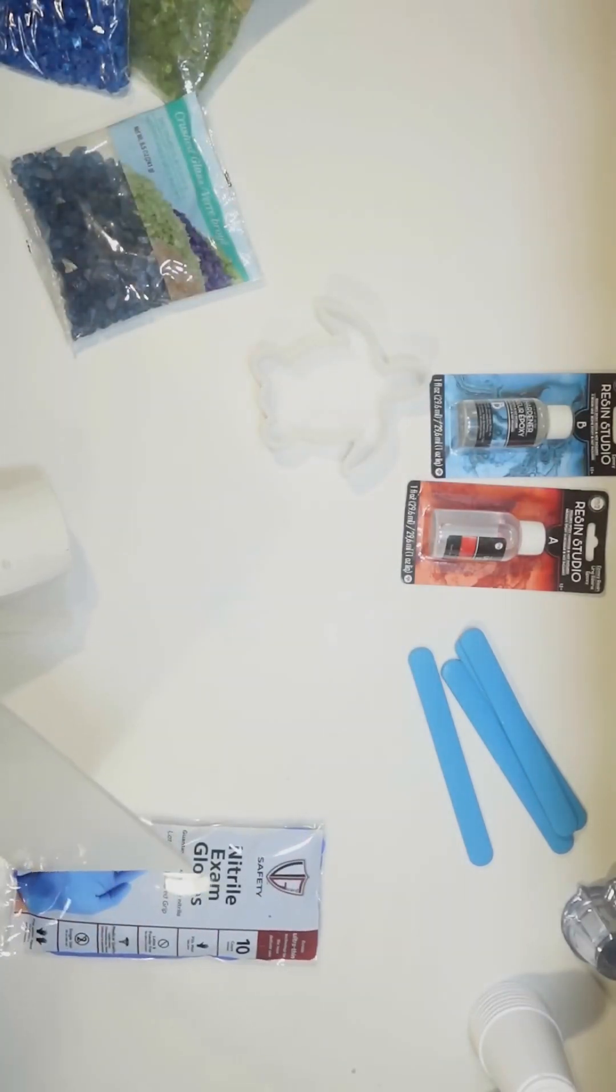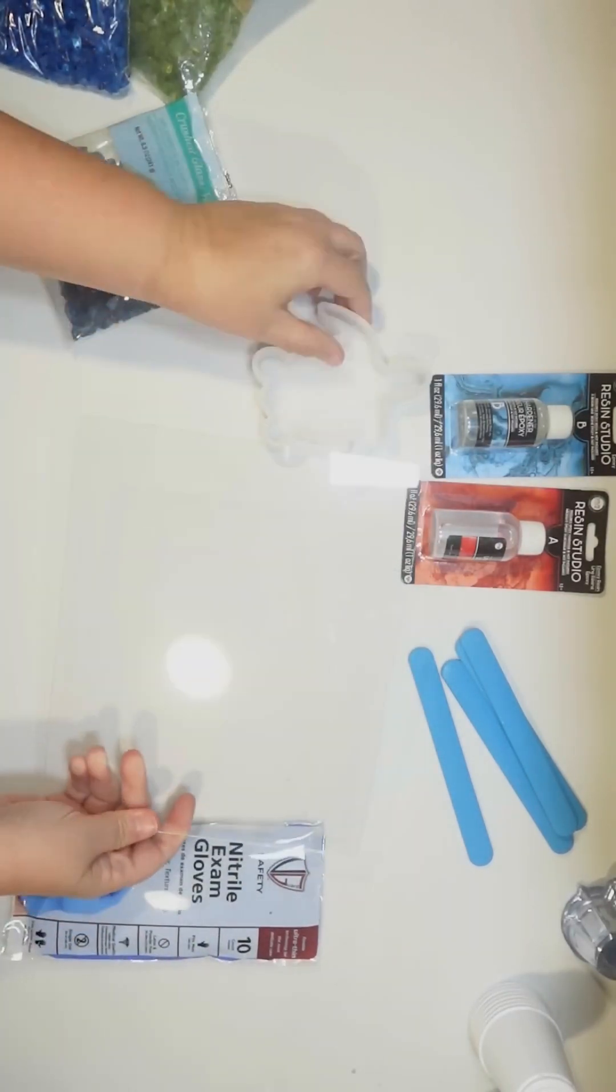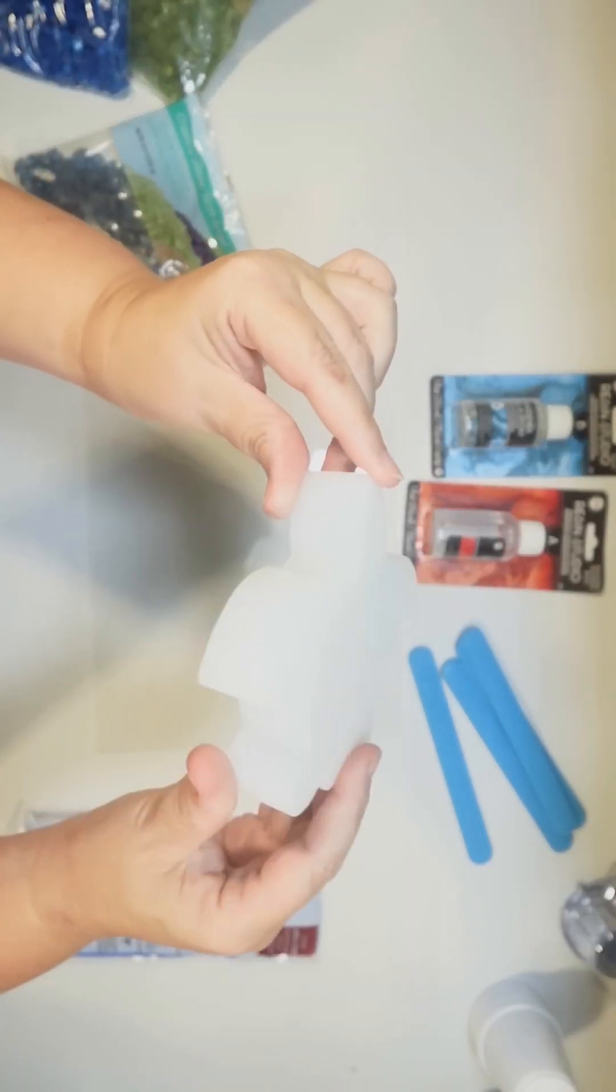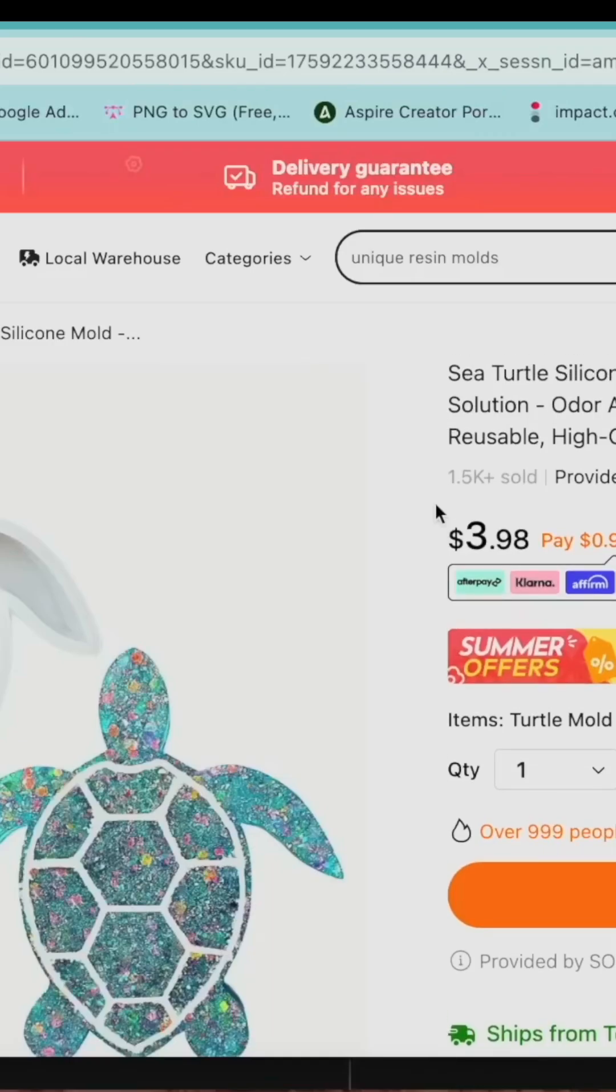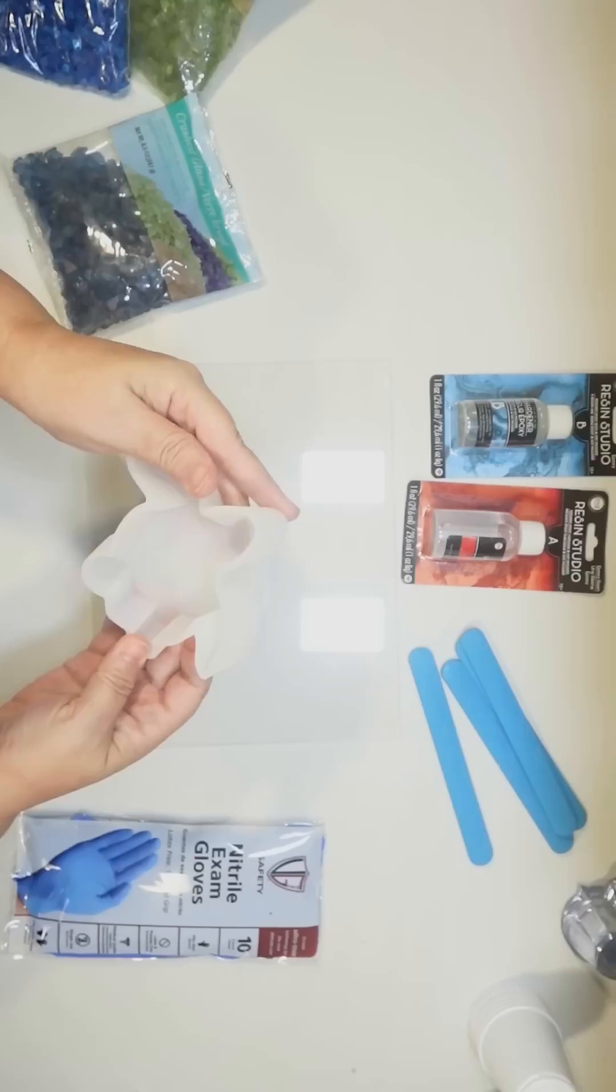from Dollar Tree, and these acrylic boards from Dollar Tree that come in handy when you're working on a resin project. This is the mold I'm going to use - it's a sea turtle mold that I found on Temu.